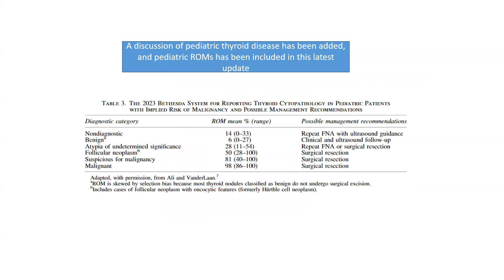Also included in this latest update is a discussion of pediatric thyroid disease, with pediatric risk of malignancy now addressed. The risk of malignancy in pediatric patients is: non-diagnostic 14%, benign 6%, AUS 28%, follicular neoplasm 50%, suspicious for malignancy 81%, and malignant 98%. For management: non-diagnostic — repeat FNA with ultrasound guidance; benign — clinical and ultrasound follow-up; AUS — repeat FNA with surgical resection. Categories 4, 5, and 6 should proceed with surgical resection in pediatric patients given the implied risk of malignancy.